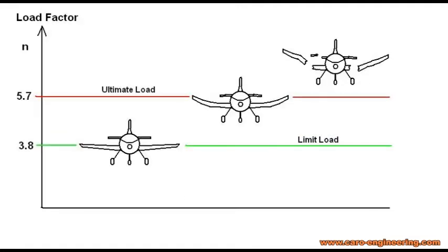The loads described in the regulations are limit loads. This means airplanes designed accordingly can be operated up to these loads without damage. Ultimate loads are limit load times the factor of 1.5. When you exceed ultimate loads, the airplane is allowed to break. Even if you exceed limit loads, the airframe may get damaged, but it should not fail in a way that would cause it to crash.